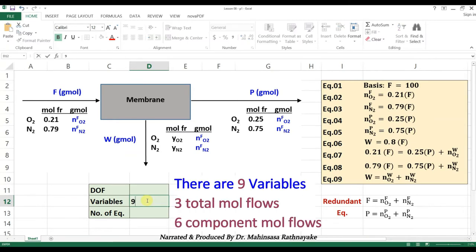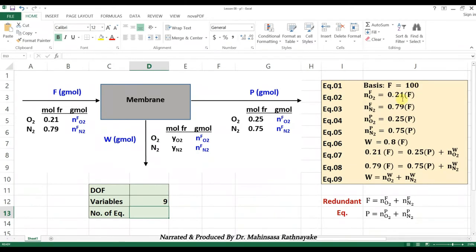The number of variables in this problem are 9. Those are the 3 stream flows and the 6 unknown individual component flows.